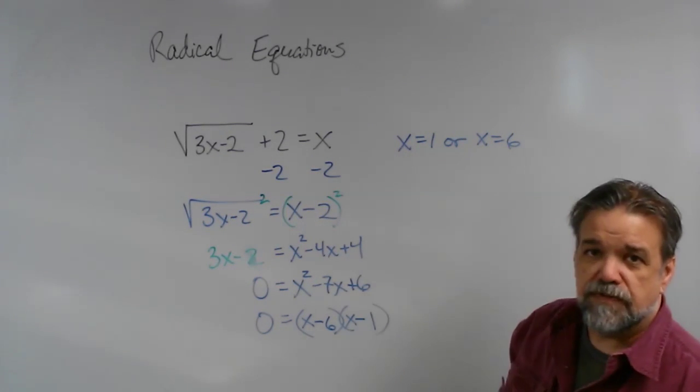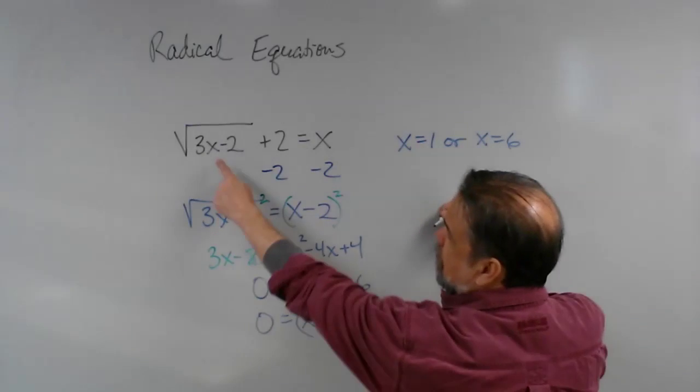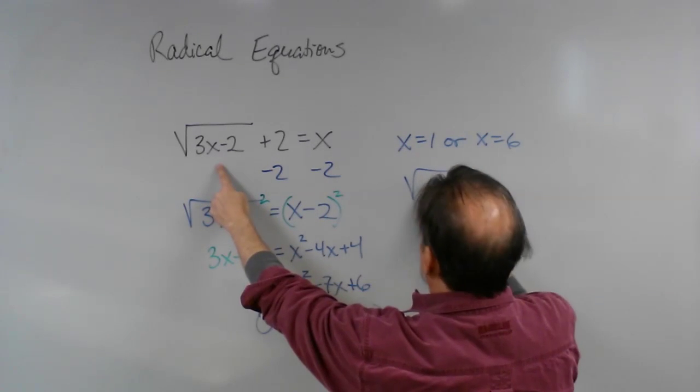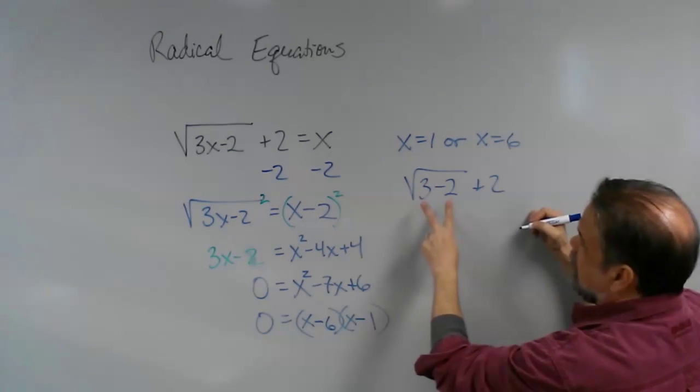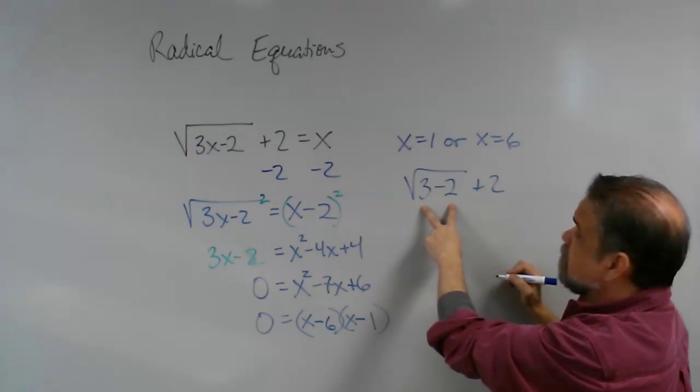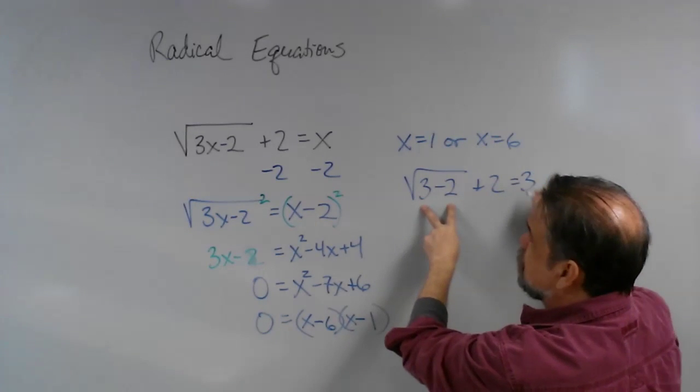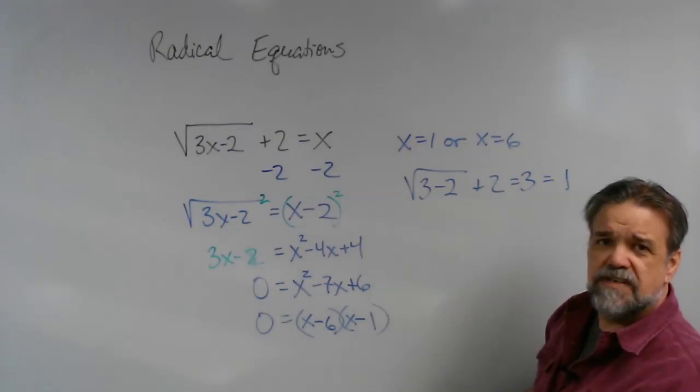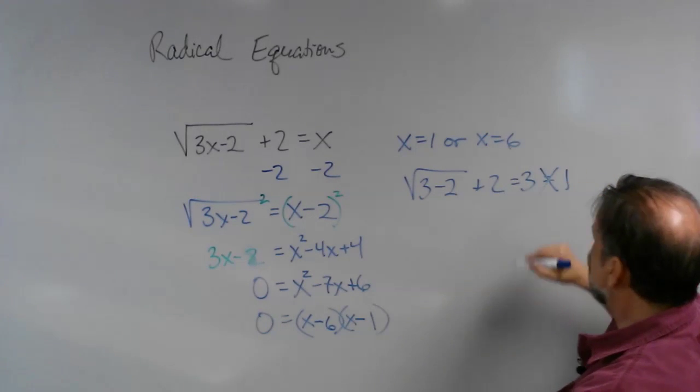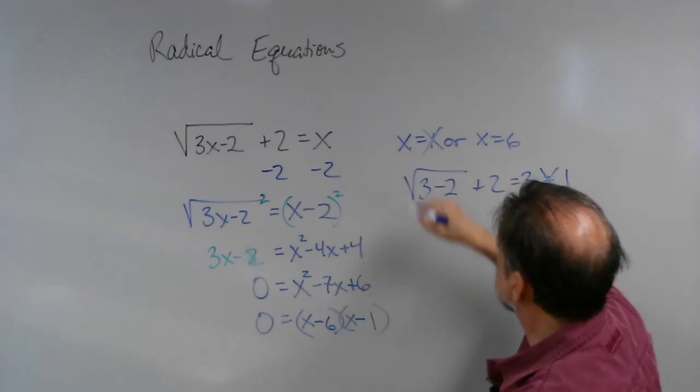Let's start with x equals 1. So I would have the square root of 3 times 1 is just 3 minus 2 plus 2, and that's the square root of 1. That gets me 1 plus 2 equals 3. Does that equal 1? No it doesn't.